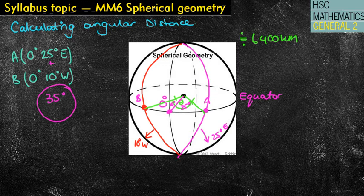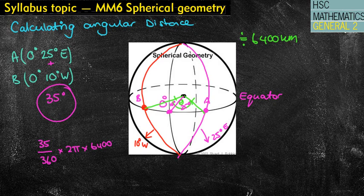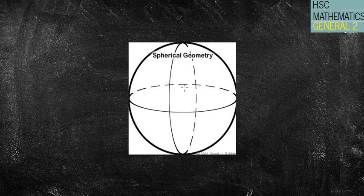Now, if I'm doing a distance, we can then apply that to the distance formula: 35 over 360 degrees times 2 pi times R, which is 6400. But what happens if they're on the same side? What happens if they're both east? Let's have a look at another question.